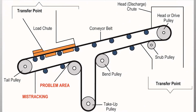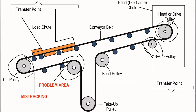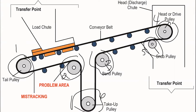The terminal pulleys on this particular conveyor include the tail pulley and the head pulley, but also a snub pulley if there is one, bend pulleys if you have them, and the take-up pulleys. These six pulleys must be aligned. If those six terminal pulleys aren't aligned, that belt's not going to track properly.